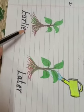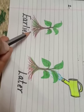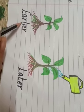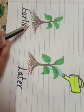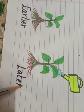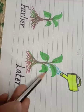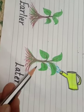Next example. Small plant is there. Then, earlier. This is the earlier. Earlier, the plant is like this. Afterwards, what you do? Later, you are watering the plant. Fine children.